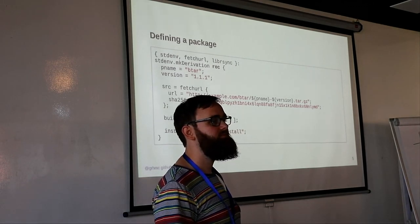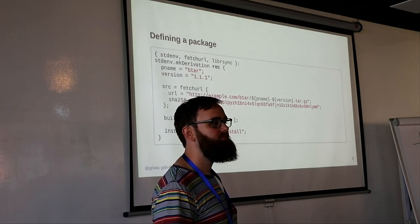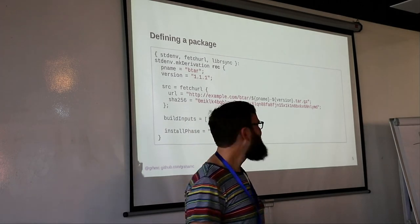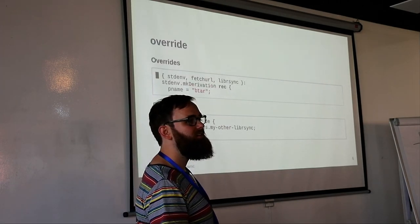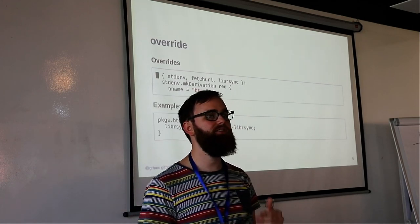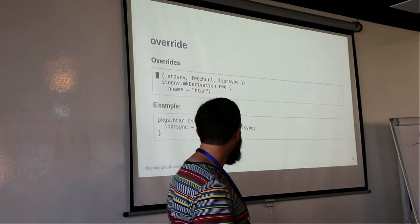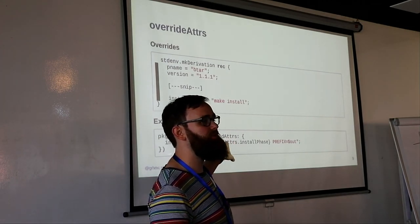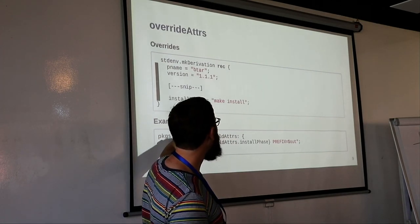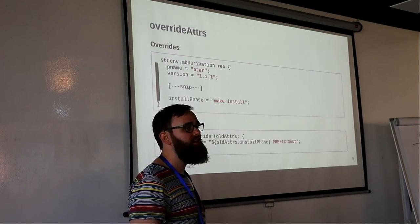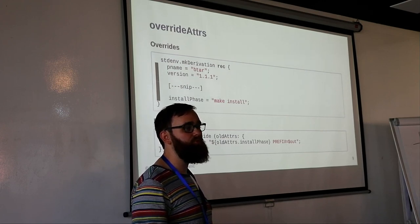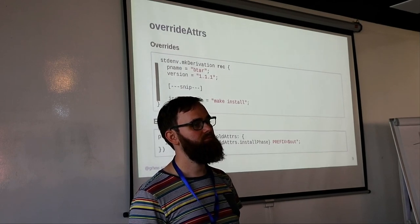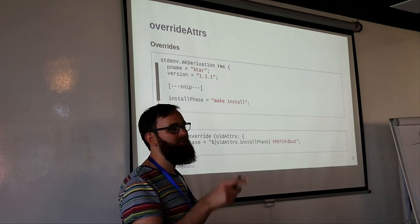Question: after you've done the override, is there a way to print out a representation of the new version? You can run `nix show-derivation` on the new package you get back from the override — you can show the derivation — but you can't show what the expression would have been. With oldAttrs you get a complete representation of the expression, but it's after fetchURL has happened, so you still don't have the full syntax tree of what your expression would have been.